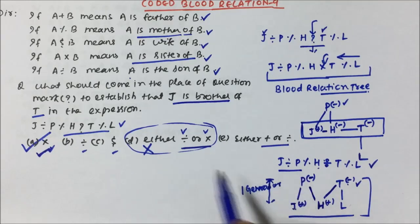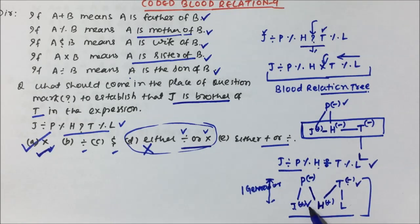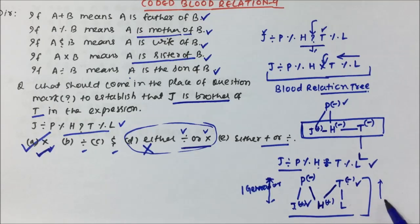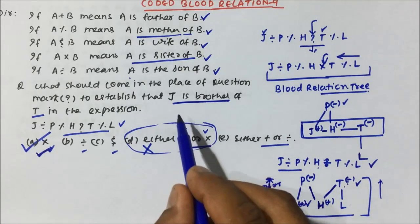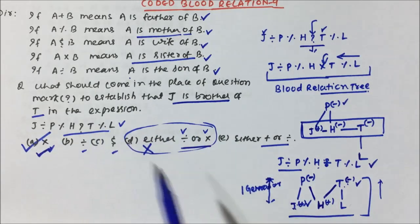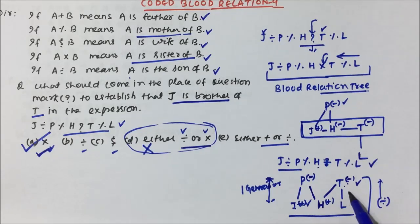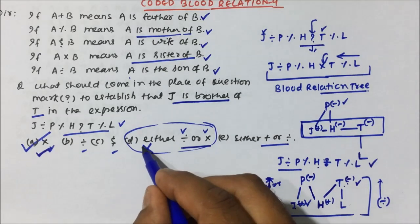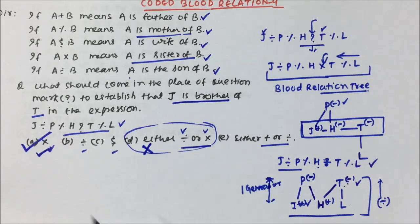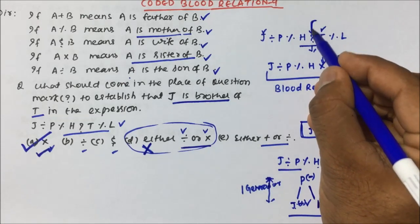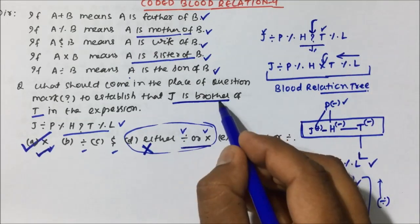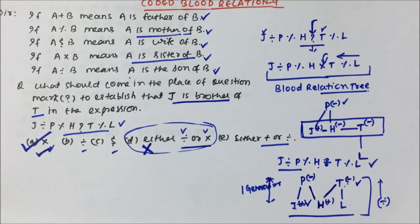J division P means J is son of P, so J is male. Now there is one generation gap between J and T, but the question says J is brother of T — meaning they should be in the same generation. Since placing division creates a generation gap, J can never be brother of T. So Option D is wrong, and Option A — multiplication — is the correct answer for question one.